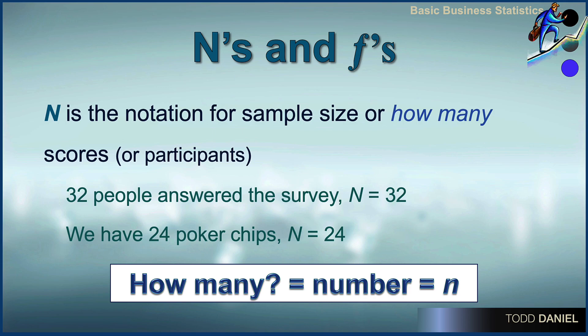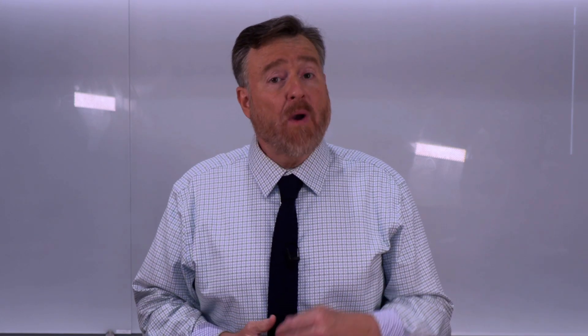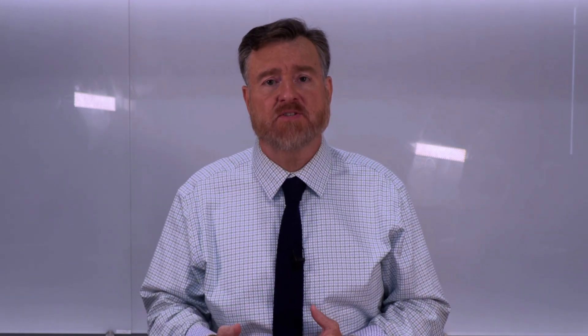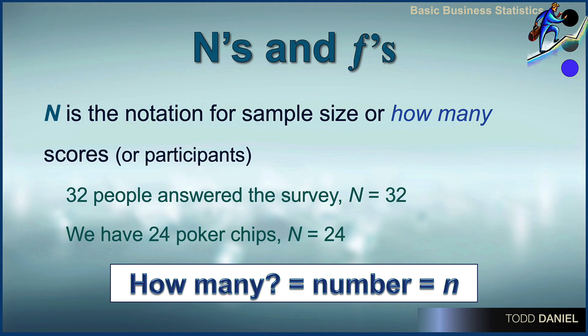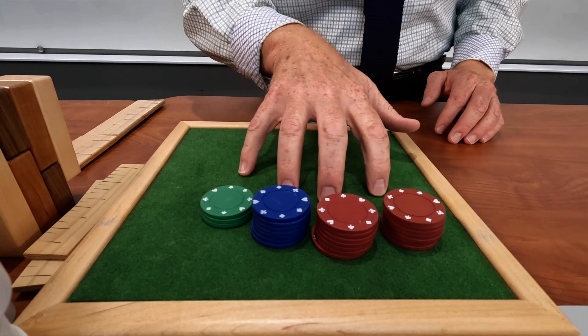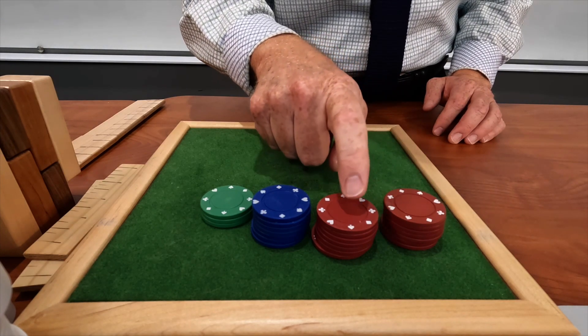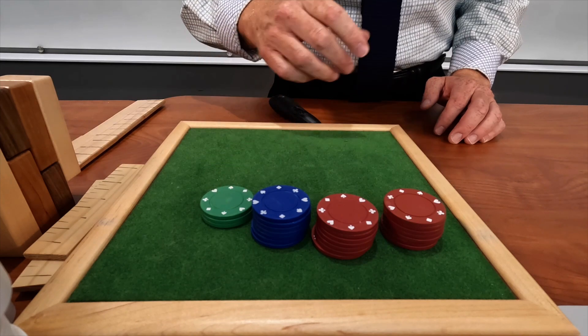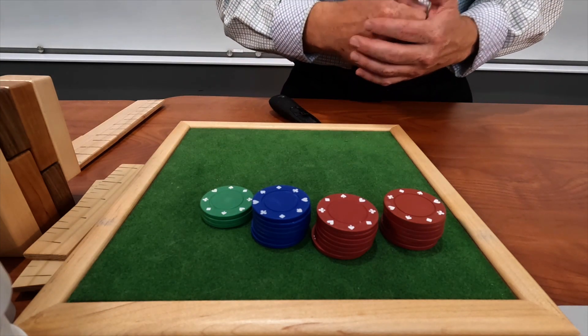N is the notation for sample size. It tells us how many scores or participants existed within our data set. For example, we conduct a survey and ask 32 people their preference on a specific question that could be answered yes or no — we would describe our total number of scores as capital N equals 32. In a different example, we have 24 poker chips, so capital N equals 24 tells us how many poker chips exist in our data.